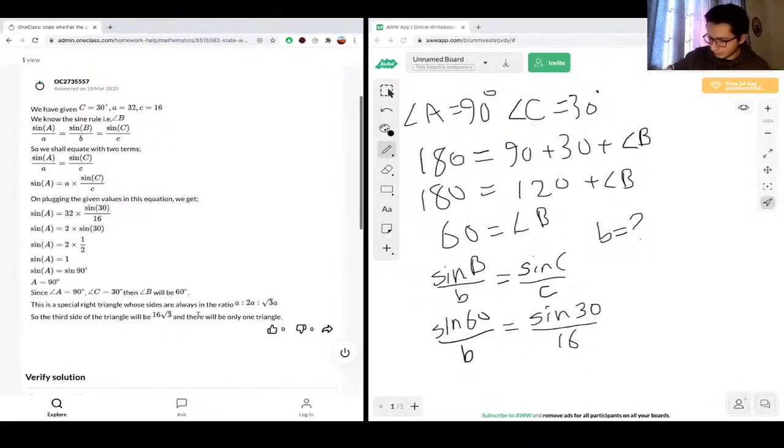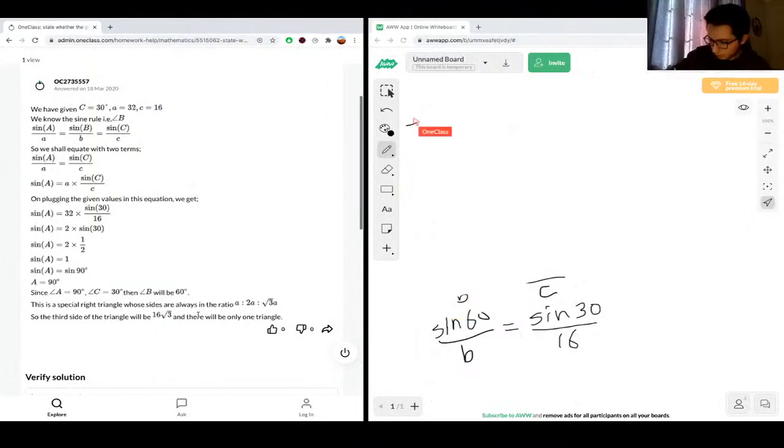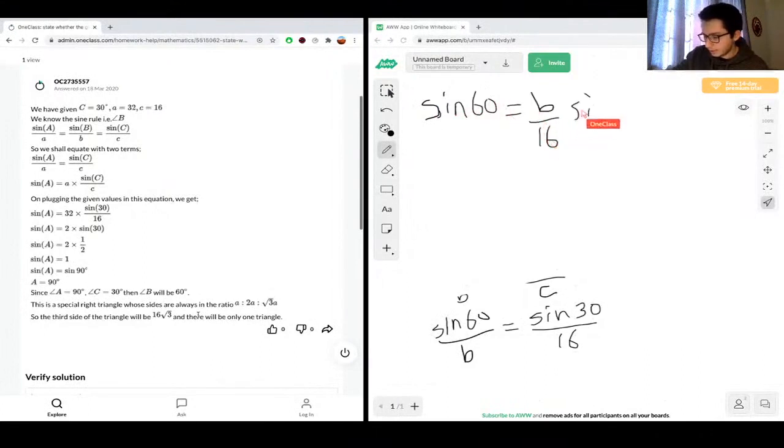So we isolate for B, so we just clear up some space up top. We isolate for B, so we'd say B, so we just switch, we multiply both sides by B, so to get rid of the term B and put B on the other side. So we have, let's keep, actually, let's keep this over here.